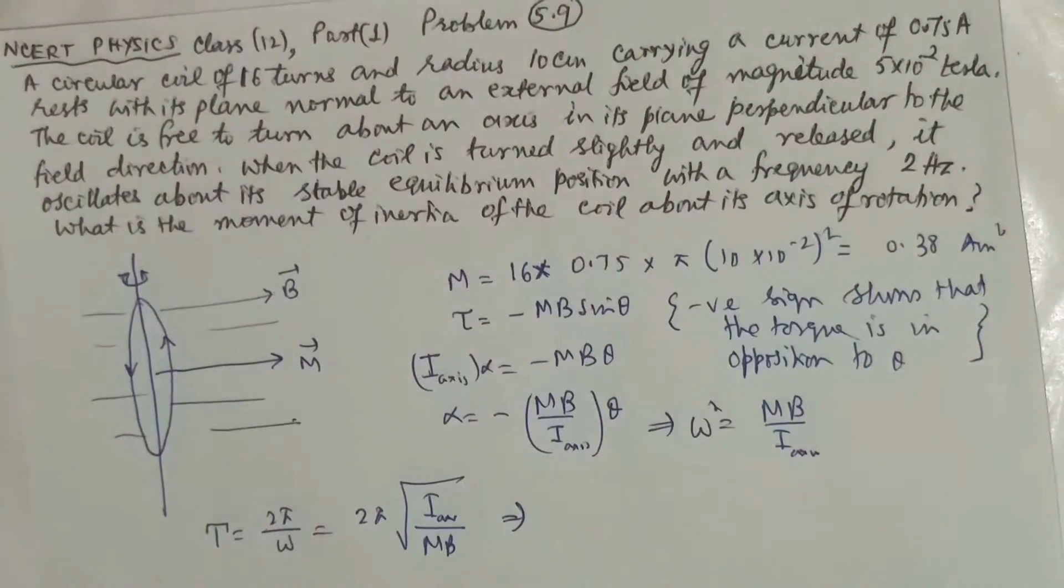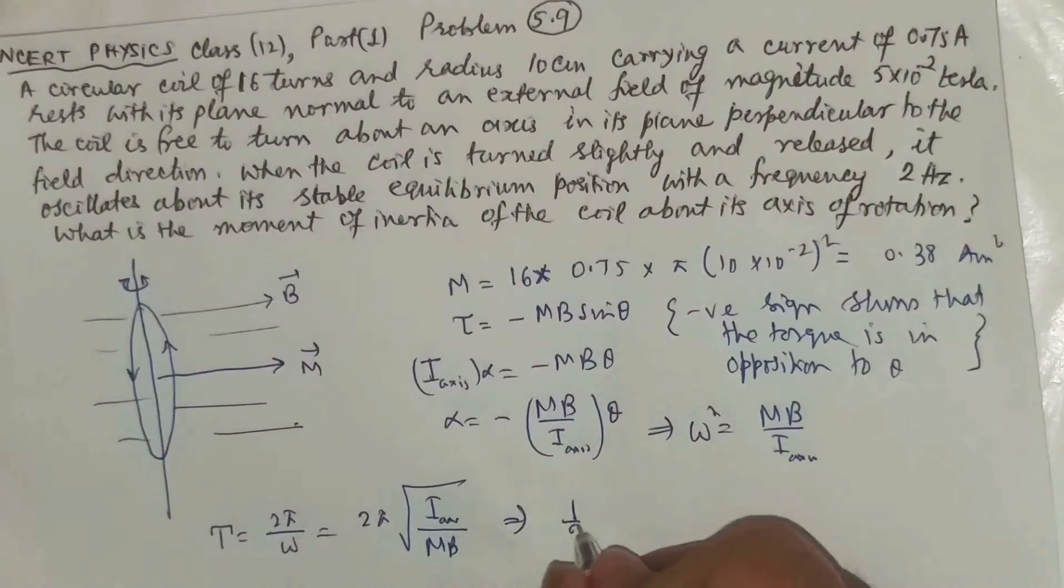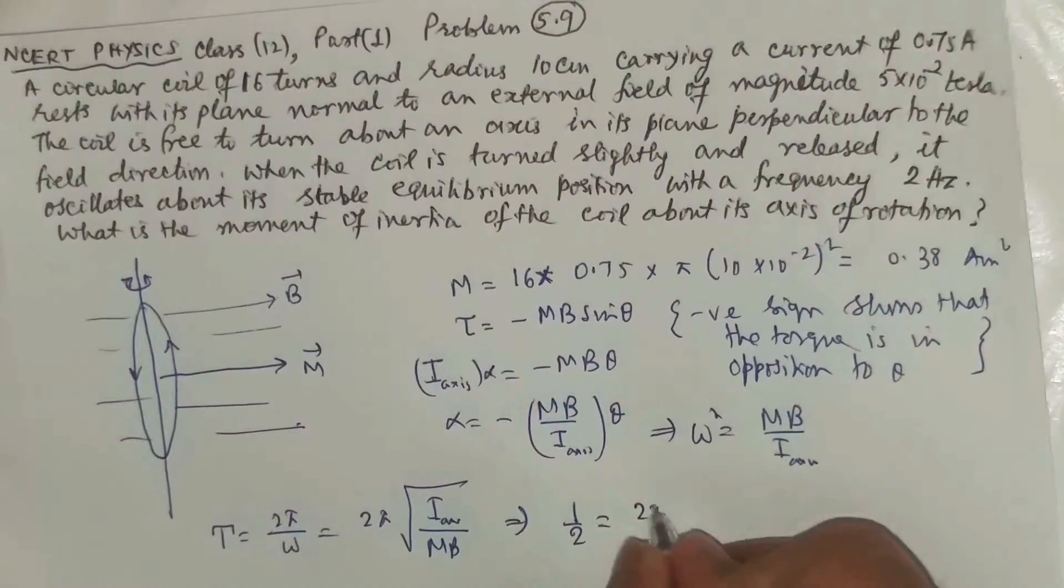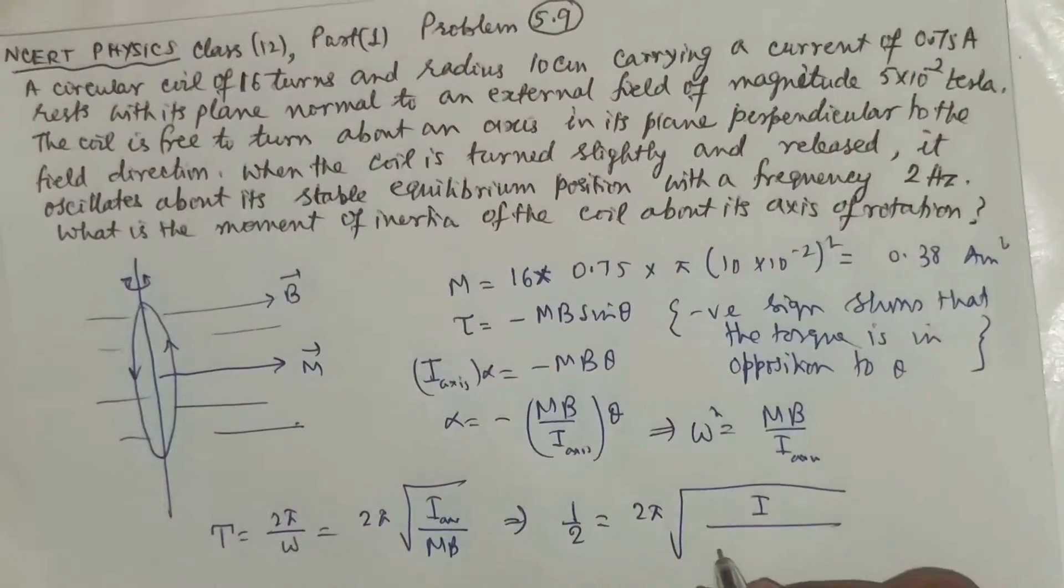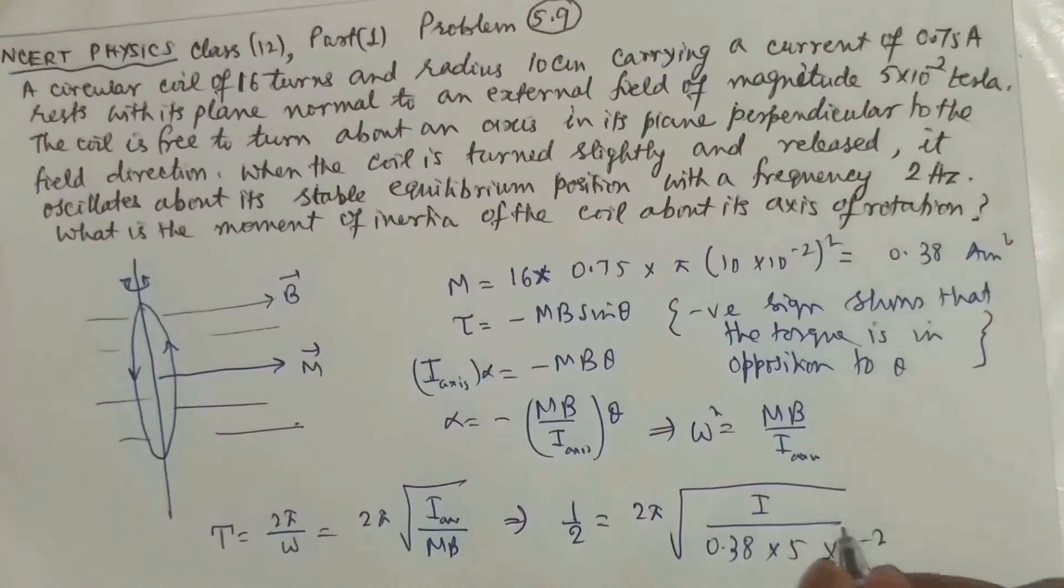Now let us put the value. They are saying that frequency is 2, so time period will be 1 by 2. And this is 2 pi root over I divided by mb, 0.38 into 5 into 10 to the power minus 2.